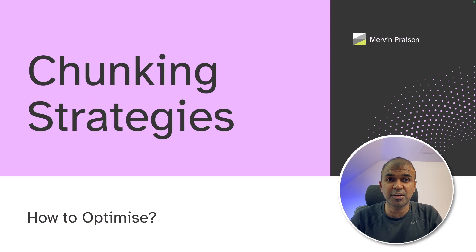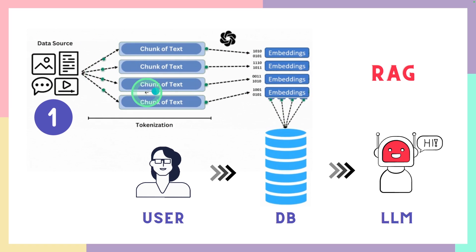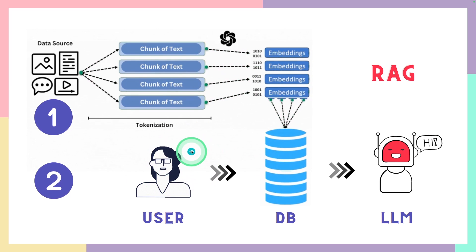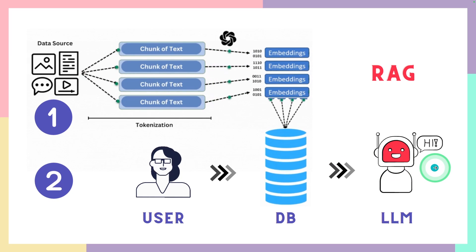We are going to see about chunking strategies in a RAG application from beginner to advanced level and how to optimize this. In a basic RAG application, the first step is that the data gets divided into chunks, then converted to embeddings, and stored in a vector database. The second step is that the user asks a question, relevant chunks are searched in the vector database, and that information is fed to the large language model as context to give a final accurate answer.